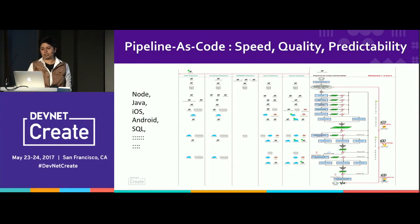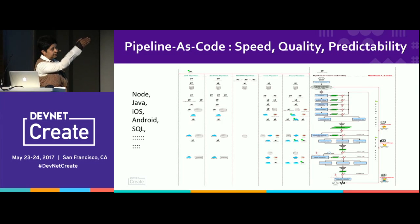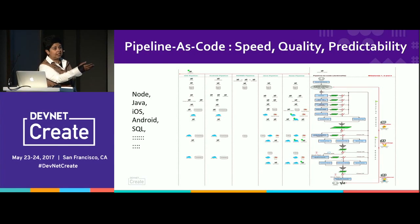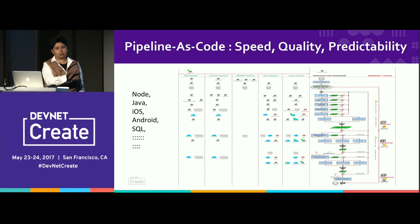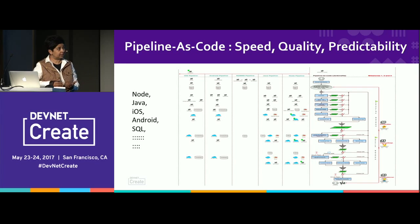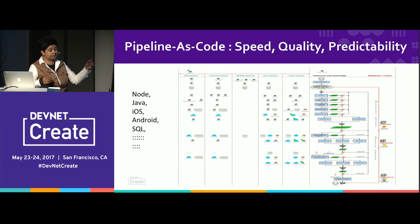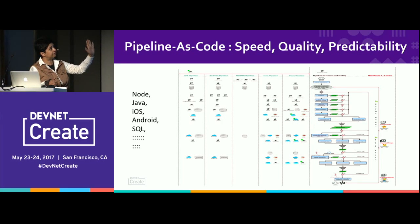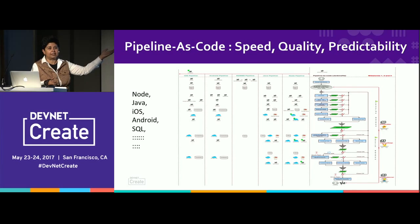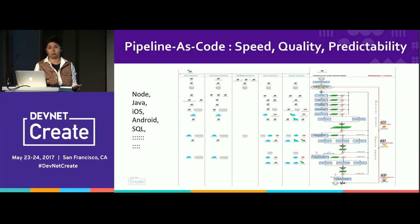Pipeline as code means speed, quality, predictability. If you have the pipeline as code, that is basically processes as code. You can implement it with AWS CodePipeline, Jenkins 2.0 with the Groovy-based Jenkinsfile — anything works. The gates make all the decisions. You have to fragment the model for Java, Node, Python, iOS, Android — it works the same way. The domain model is the same; the fragmentation is different because the tooling is different.